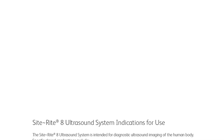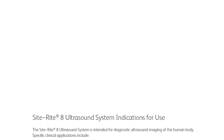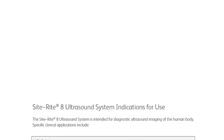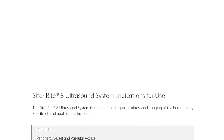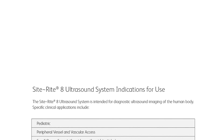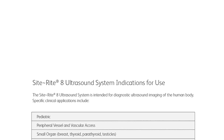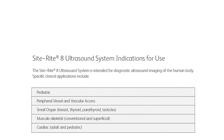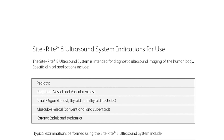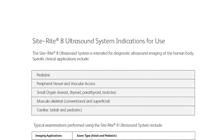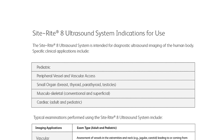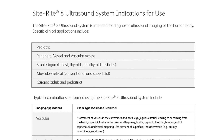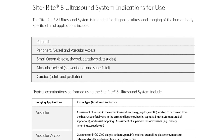The SiteRite 8 Ultrasound System is intended for diagnostic ultrasound imaging of the human body. Specific clinical applications include pediatric, peripheral vessel, and vascular access, small organ, breast, thyroid, parathyroid, testicles, musculoskeletal conventional and superficial, and cardiac, adult and pediatric.